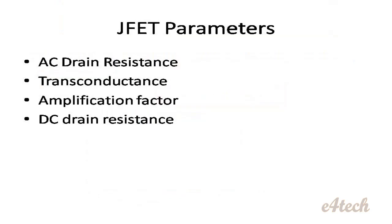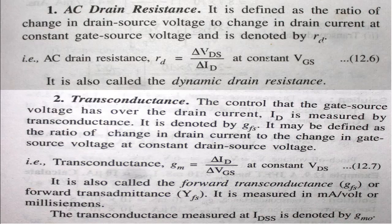Next, J-FET parameters. There are four parameters: AC drain resistance, transconductance, amplification factor, and DC drain resistance. AC drain resistance is defined as the ratio of change in drain-source voltage to the change in drain current at constant gate-source voltage. It is denoted by rD or rd, where rD = ΔV_DS / ΔI_D at constant VGS.